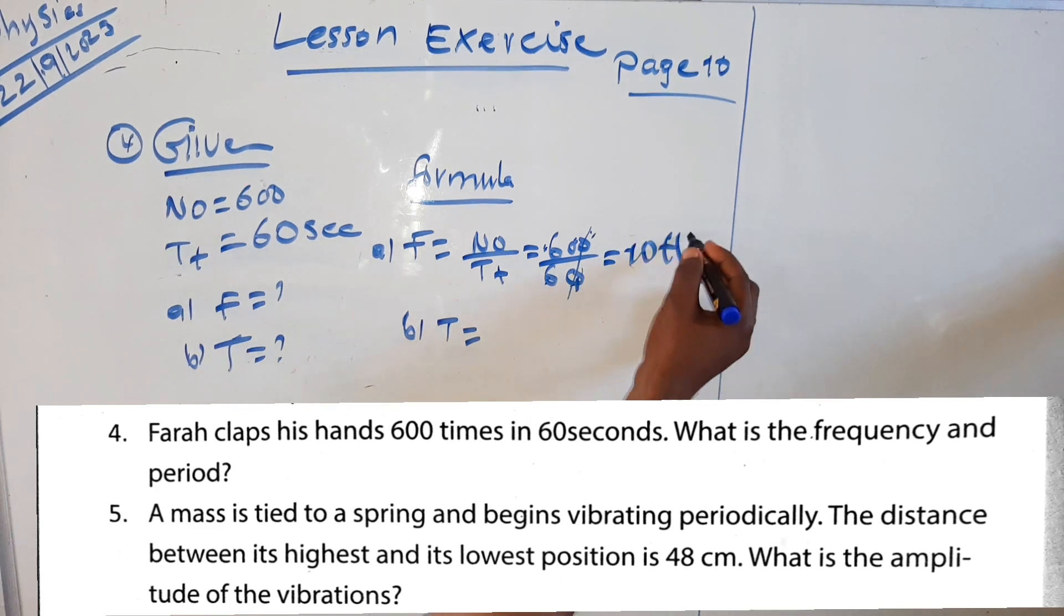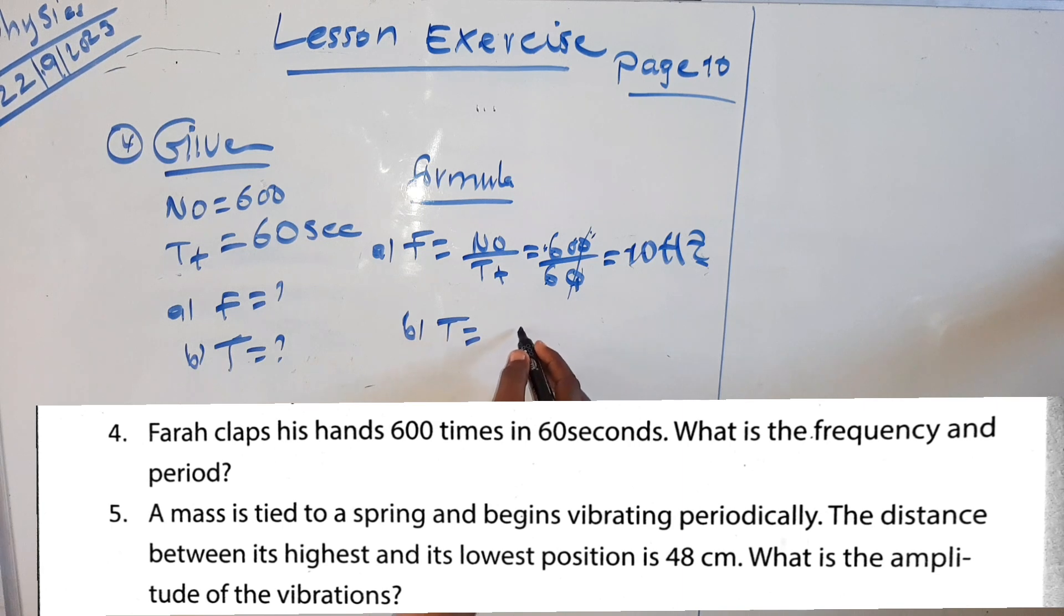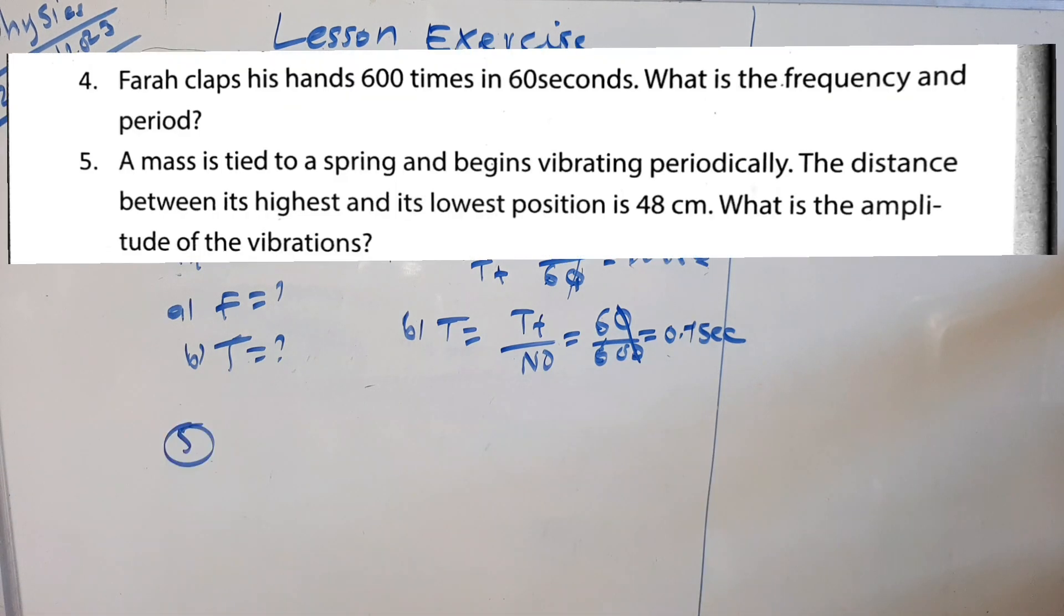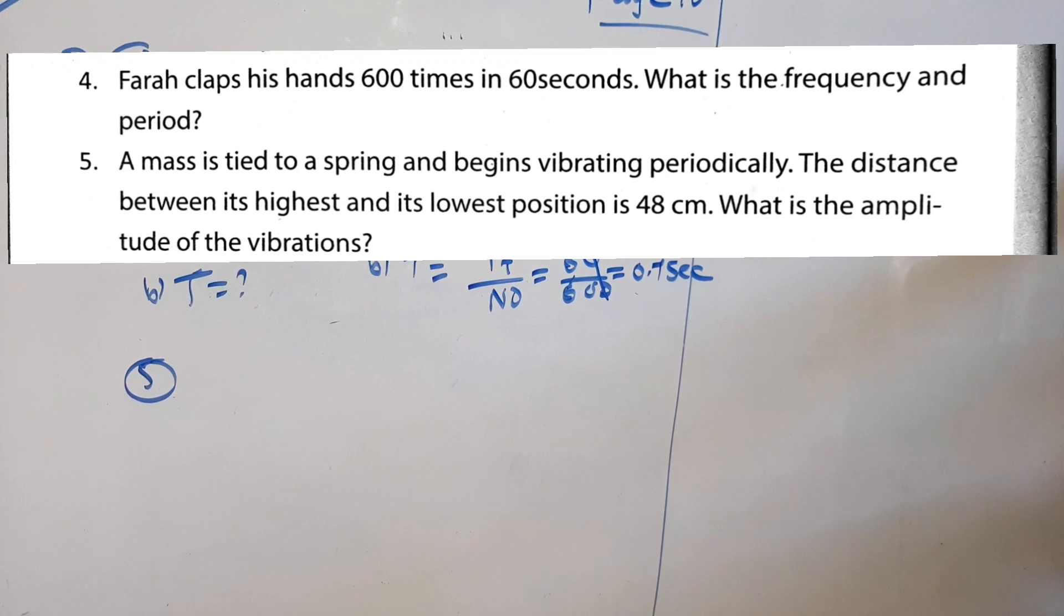Number 5. A mass is tied to a spring and begins vibrating periodically. The distance between the highest and lowest position, what is the amplitude of the vibration?